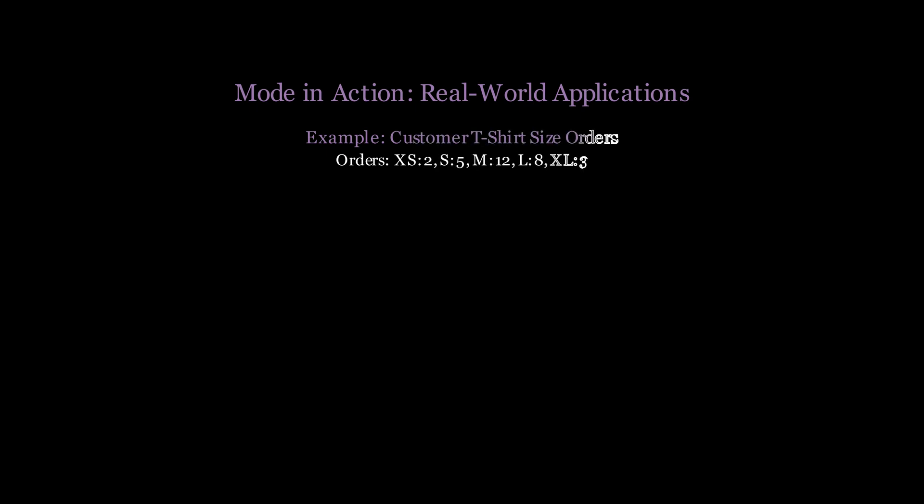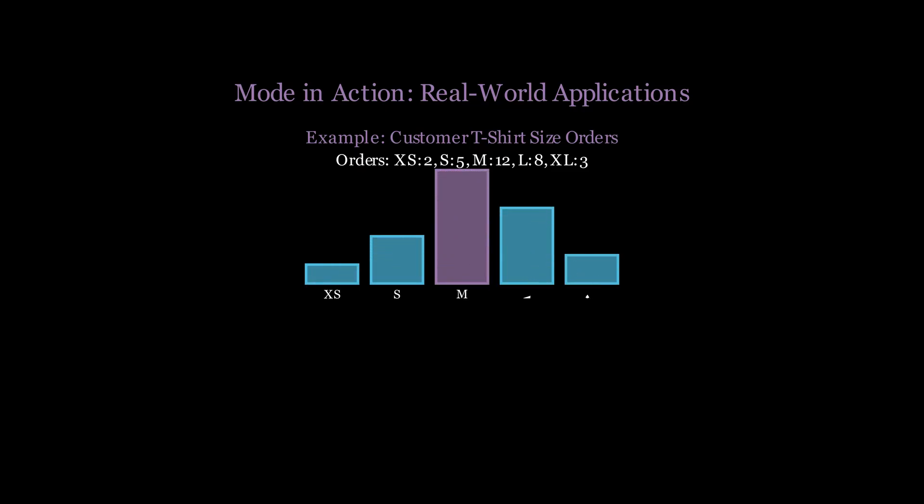Here's where the mode becomes incredibly practical. Imagine you're analyzing t-shirt orders: 2 extra small, 5 small, 12 medium, 8 large, and 3 extra large. You can't calculate the average of t-shirt sizes—what would that even mean? But the mode is crystal clear: Medium is most popular, appearing 12 times. This directly informs business decisions—stock more medium sizes. The mode answers the crucial question: What should we focus on most?